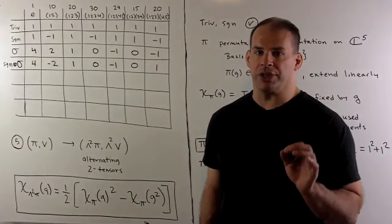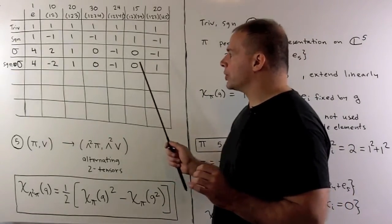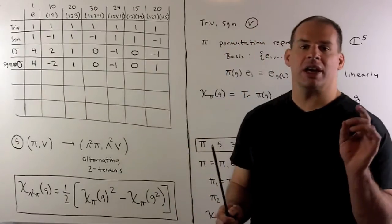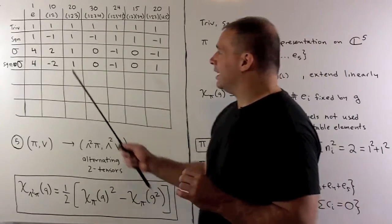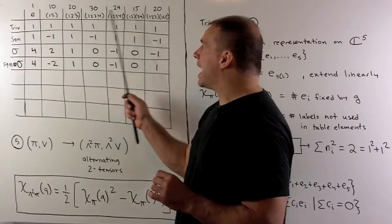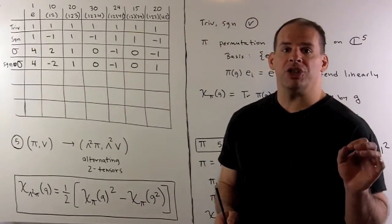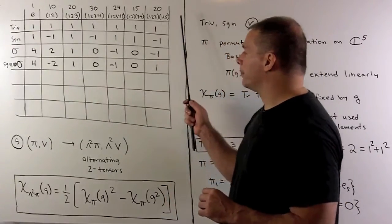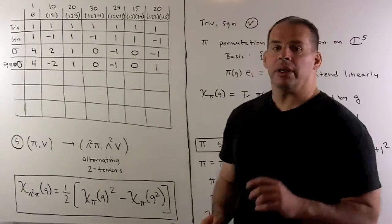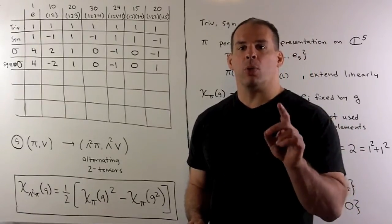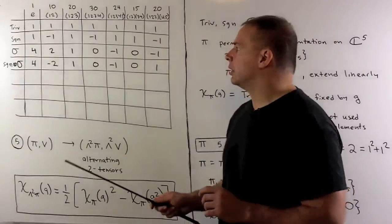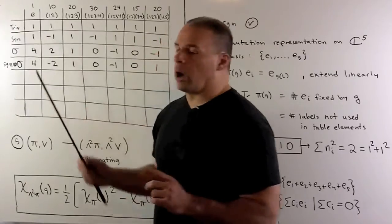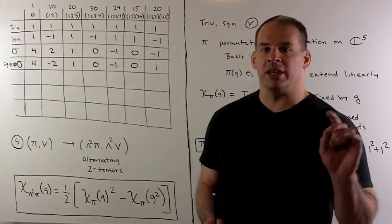Let's form our character table. We'll have seven rows, one for each irreducible character, and seven columns, one for each conjugacy class. We'll weight each column by the number of elements in the class. When we check the orthogonality relations and sum our values, we have to weight by the numbers along the top. Proceeding as we did for S4, we get four irreducible characters for free. We start with the trivial and sign representations, each of dimension one, so the representation is equal to the character.